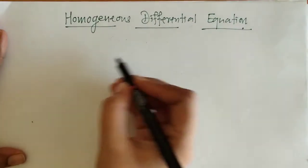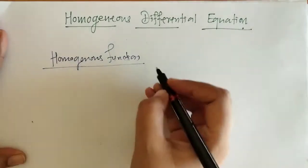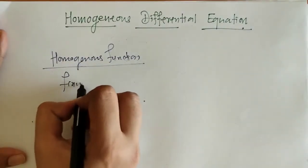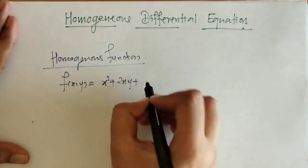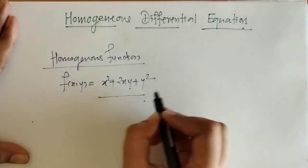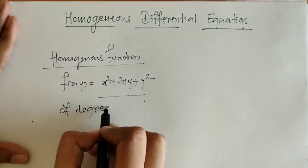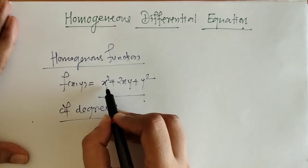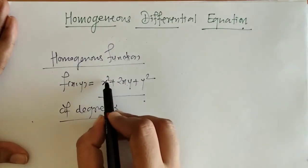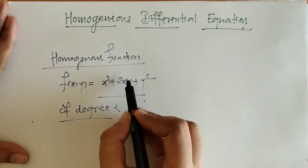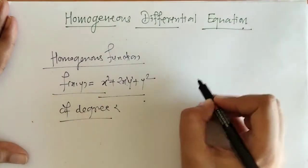To understand this, we should first know what a homogeneous function is. Consider the function f(x,y) = x² + 2xy + y². This is a homogeneous function of degree 2, because the degree of each term is 2: x² has degree 2, xy has degree 1+1=2, and y² has degree 2.